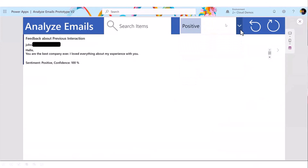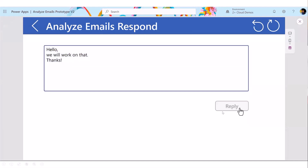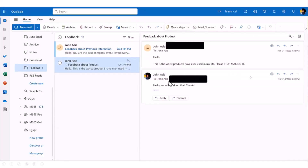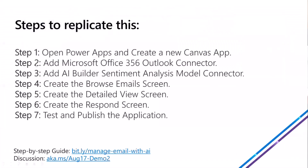Here is a demo of the app we are going to build together. You can group sentiments by choosing from a filter dropdown menu, open an email, respond to an email, write the message, and click reply. If we go to our Outlook account we can see that it actually works. The steps to replicate this are straightforward: open Power Apps, create the canvas application with three pages, add the Microsoft 365 Outlook connector, add the AI Builder sentiment analysis model connector, create the screens, then test and publish the app.